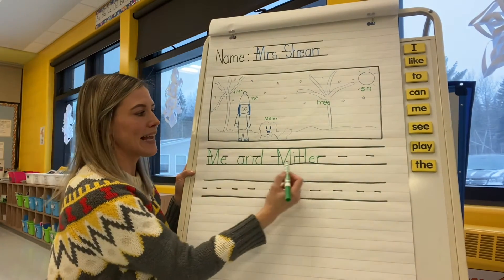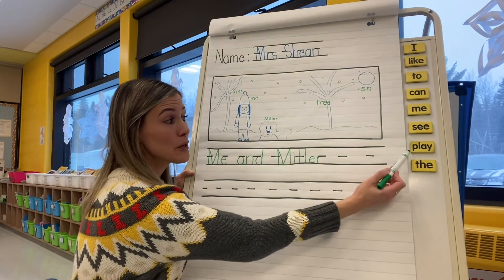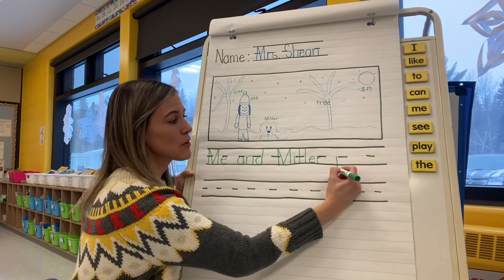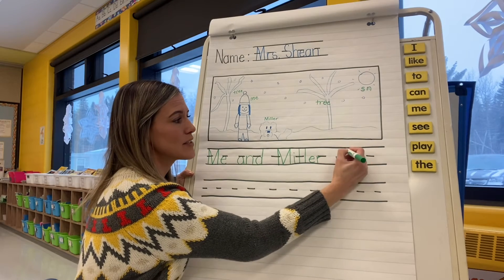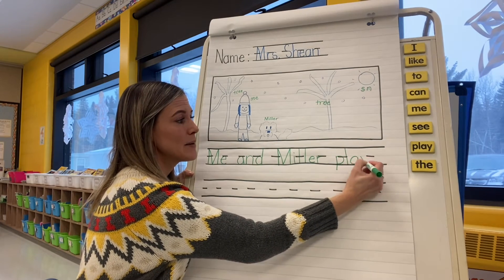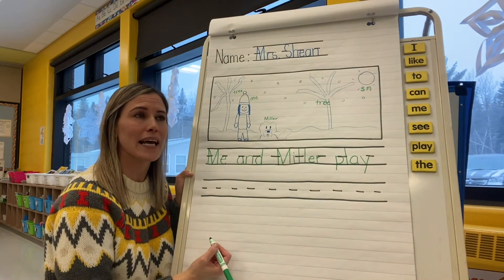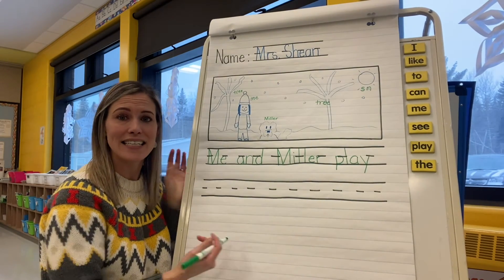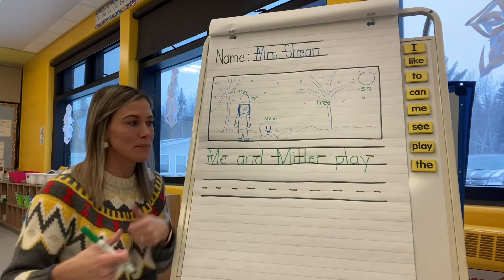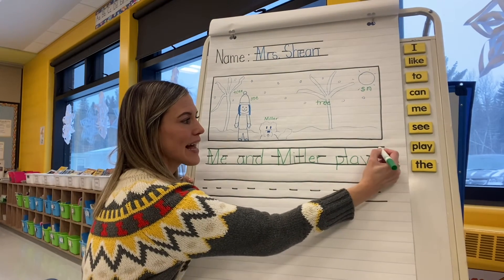So me and Miller played. I have the word "play" — we know that play is a sight word. So I'm going to write the word play because the word play is in the word played. Now if I change the word play to played — remember pretending that we're playing the drums with our thumbs — I'm going to add a D.